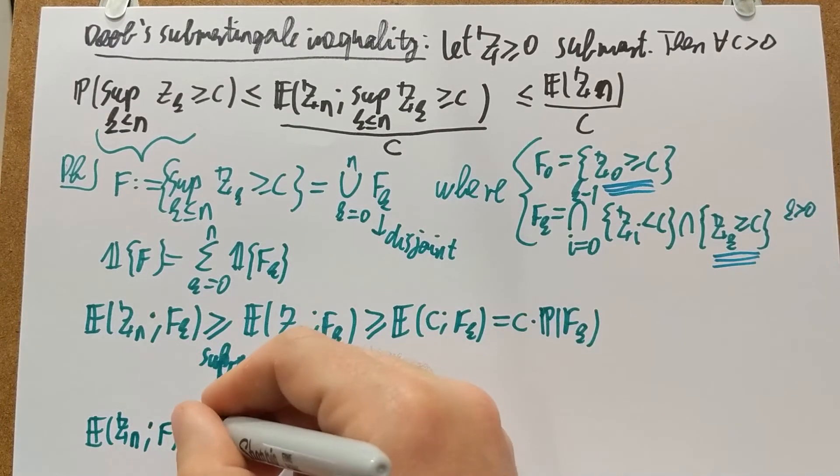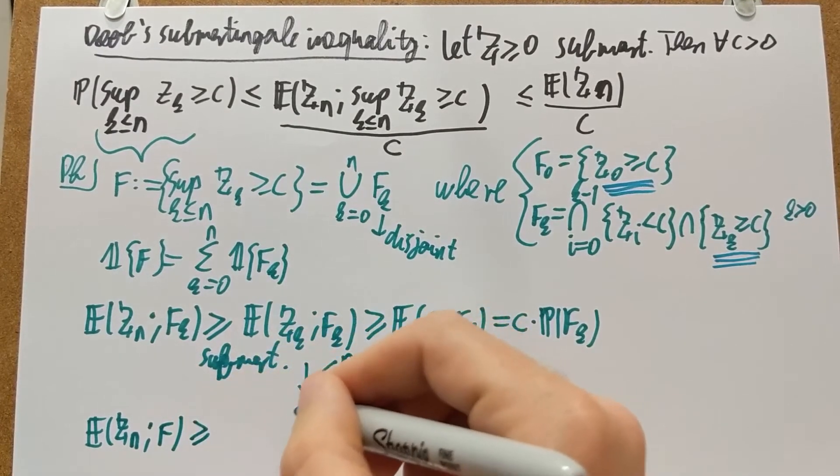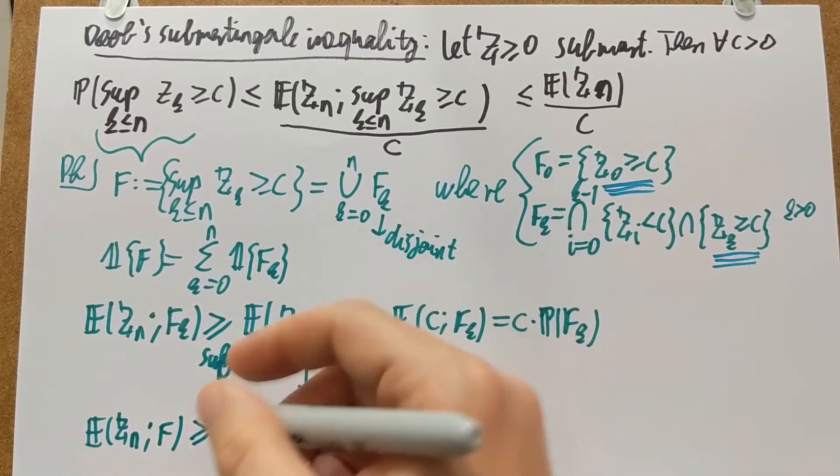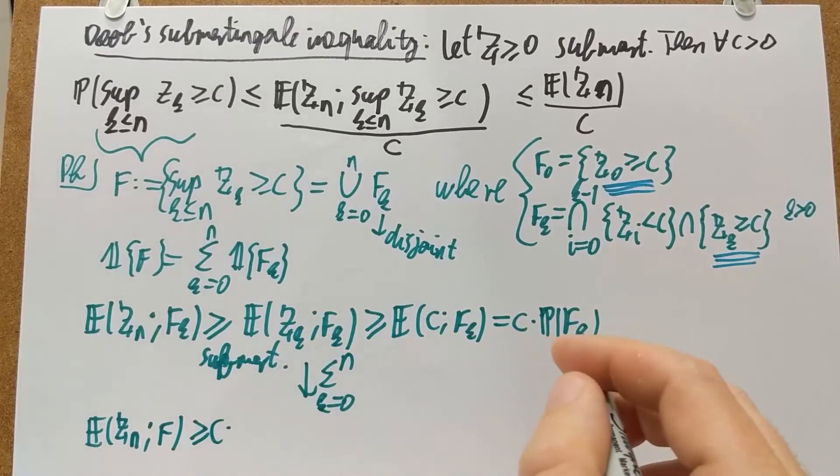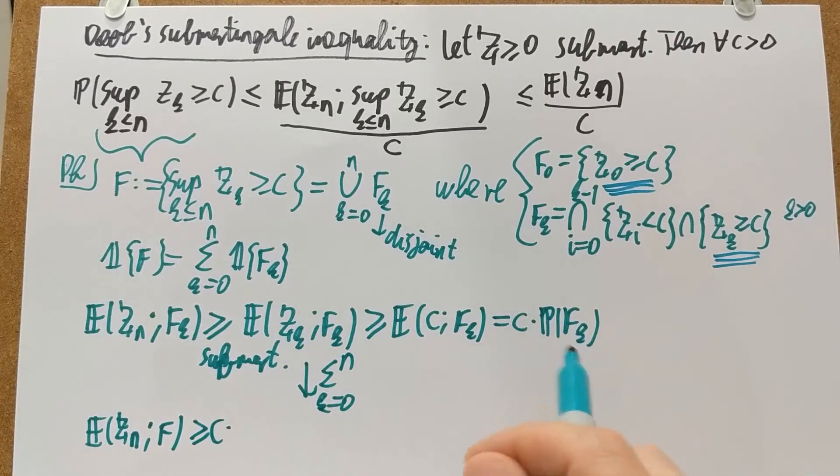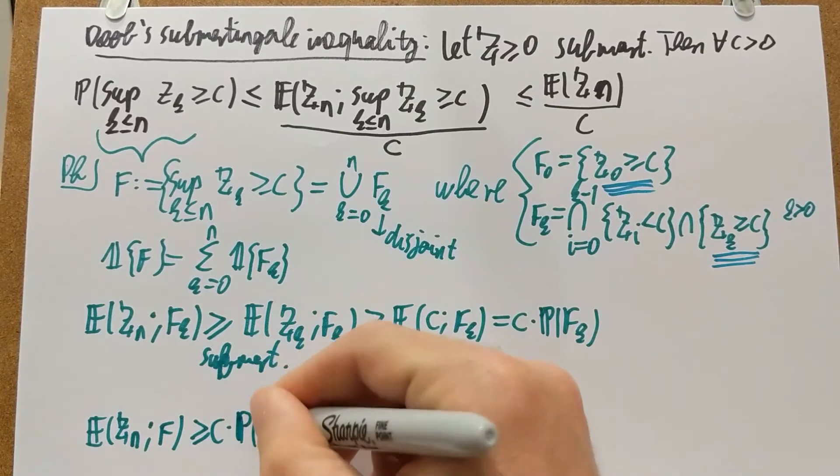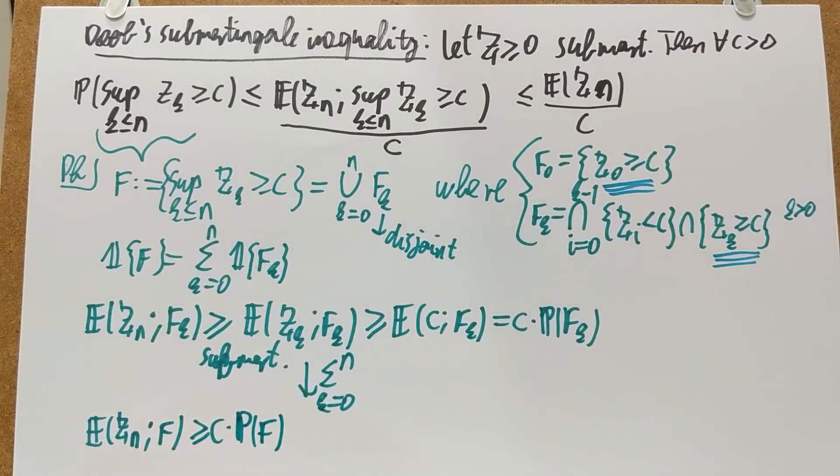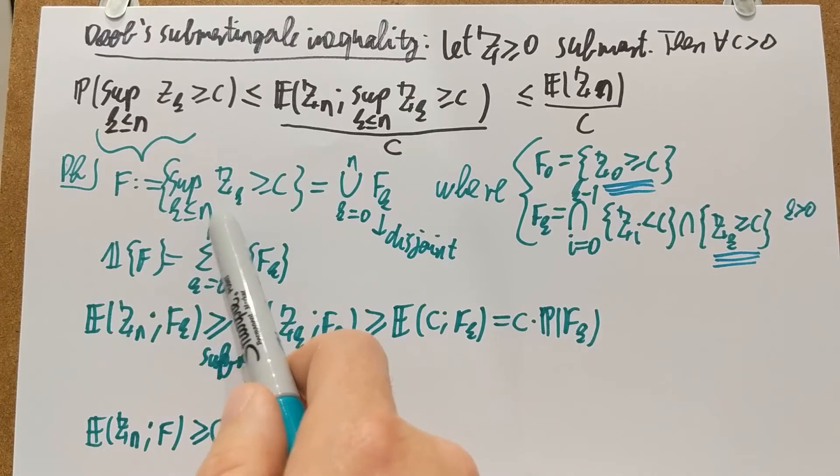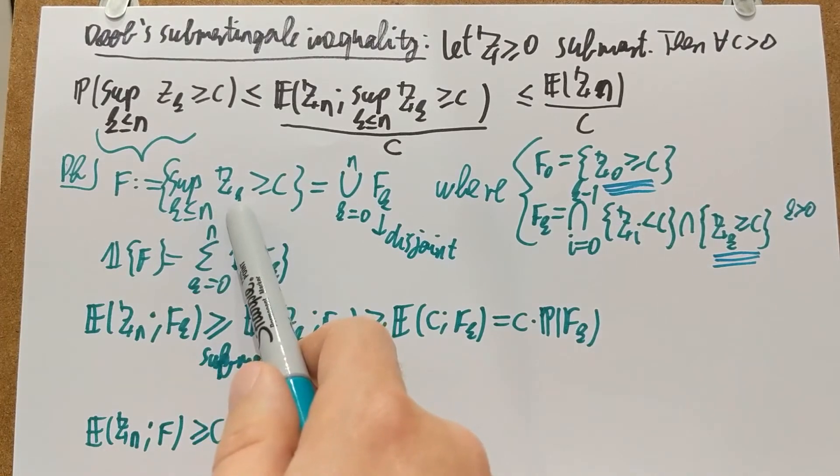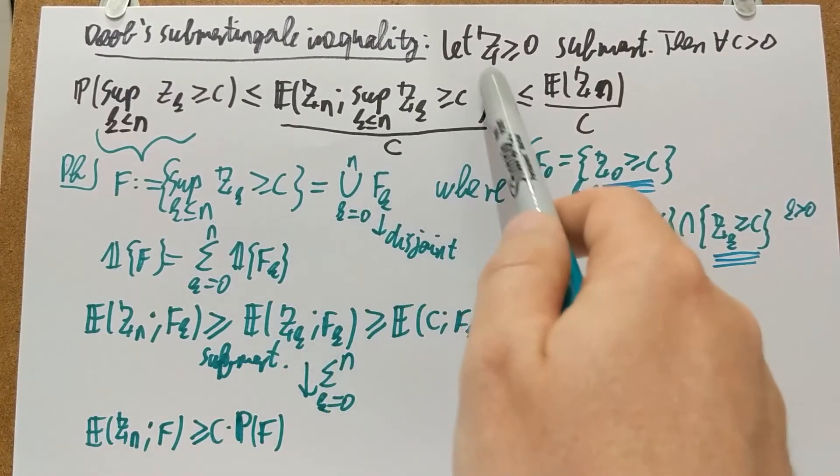On the right-hand side, I have the C constant times the sum of the probabilities of the F_K's. But because these guys were disjoint, the sum of the probabilities is the probability of the union. So I end up with the probability of the event F. And if you look carefully, the F event, Z_N on F, the event F is exactly that the supremum of the Z_K is at least C. So that's exactly the event F.